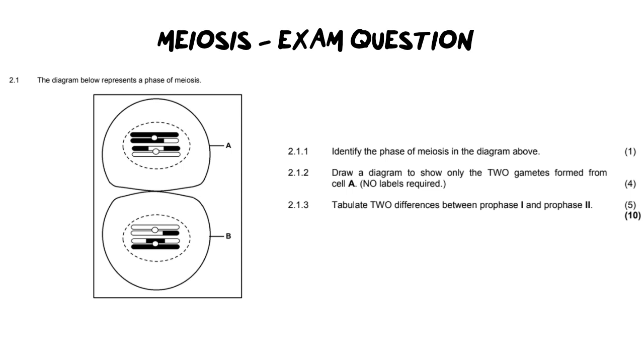Now the opening statement for this diagram is that it represents a phase of meiosis, so they're not telling us very much. If we look down at the photograph below, there are some clues as to what phase of meiosis we're actually in.